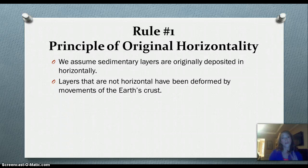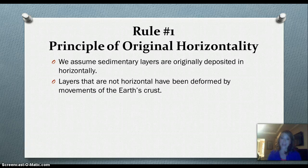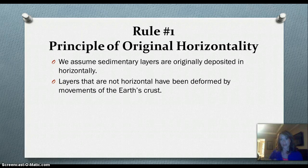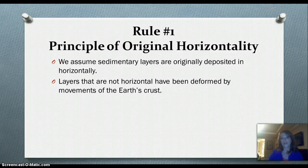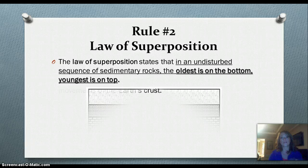Let's start with the first rule. We're going to talk about three rules that scientists use to figure out the relative age of rocks. Rule number one is the principle of original horizontality. It basically means that when rock and layers of sediment are deposited, they're deposited in a horizontal, flat layer. And if the layers are messed up — if they're deformed, bent, folded, or faulted — that happened after the layers were deposited. That's an assumption we will make as we're figuring out the order of rock layers in our diagrams.